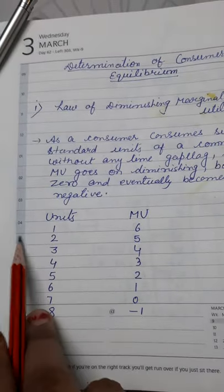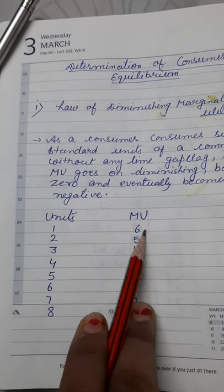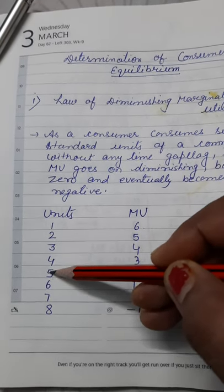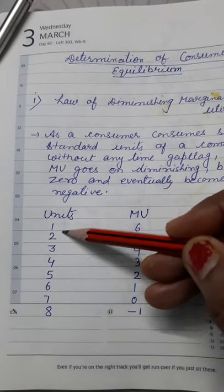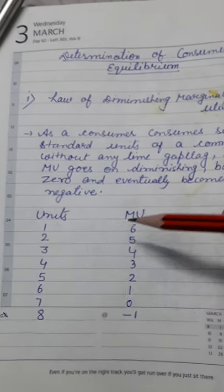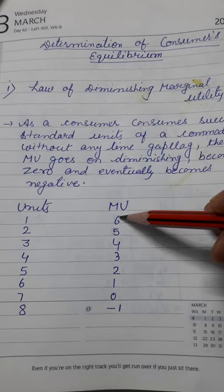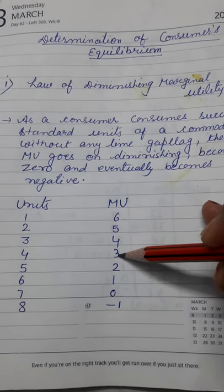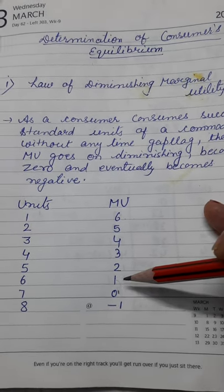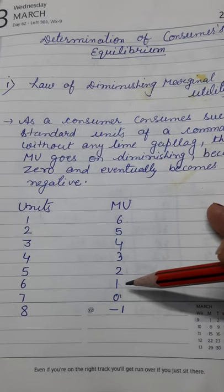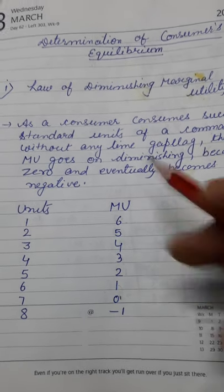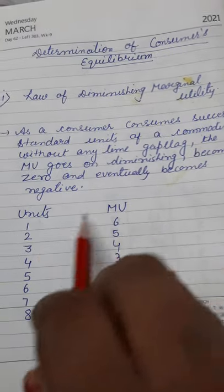It becomes zero and eventually becomes negative. I have given the example of glass of water. When you are very much thirsty, it gives much satisfaction and after every next glass, the marginal utility decreases or diminishes. Zero means the consumer is saying I don't want a single unit of the commodity. That is called point of satiety and after that it becomes negative.